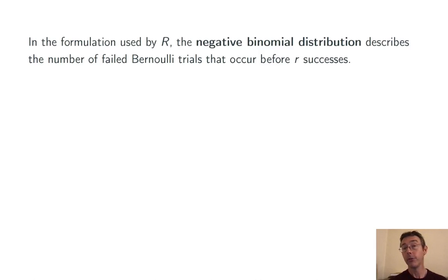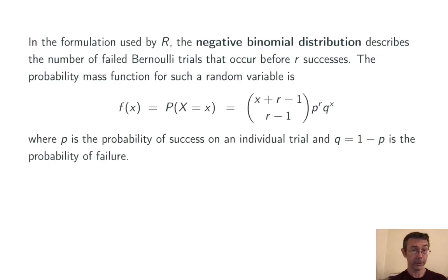Remember, the negative binomial distribution models the number of failed Bernoulli trials that occur before a fixed number of successes. Here's the probability mass function. I'm not going to say a whole lot about it here. I've got an entire video on this subject. I'll throw a link up top.